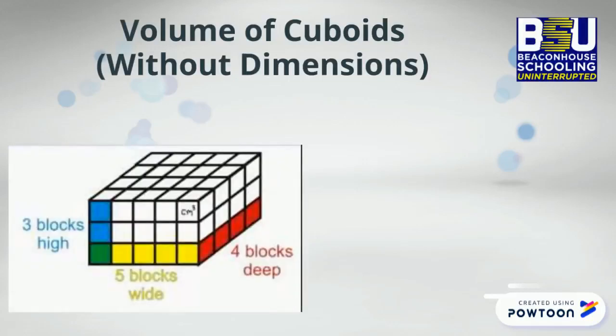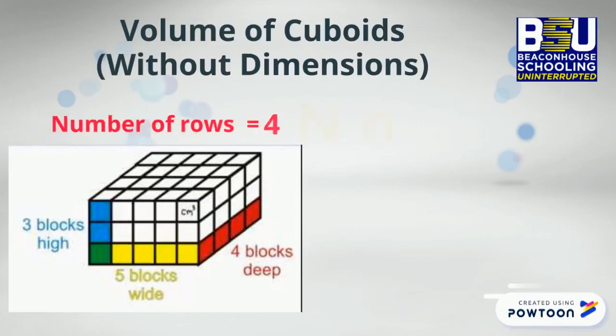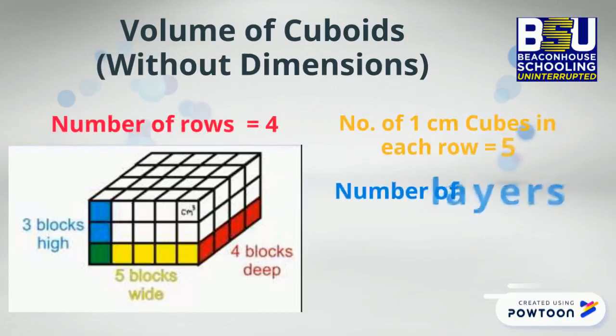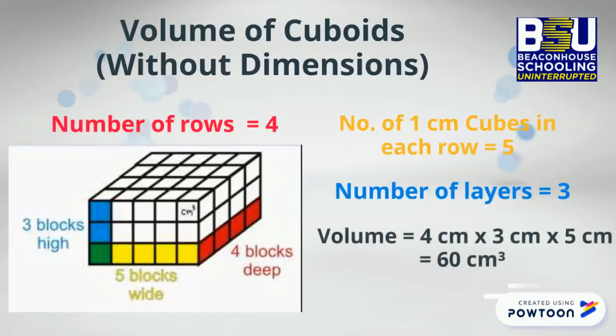For example, in the shown cuboid, you can see the number of rows are 4, the number of 1 cm cubes in each row are 5, and the number of layers are 3.